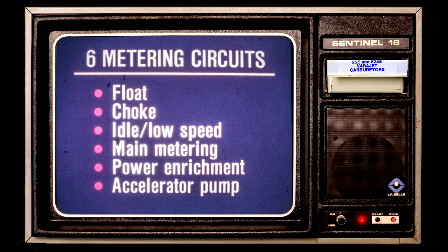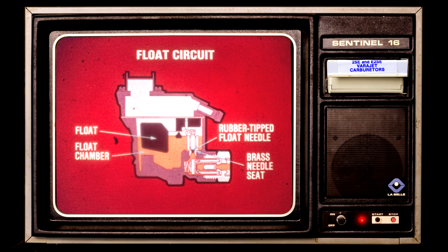The six metering circuits of the 2SE and E2SE carburetors are: the float, choke, idle and low speed, main metering, power enrichment, and accelerator pump circuits. These are conventional circuits found in most carburetors throughout the industry.